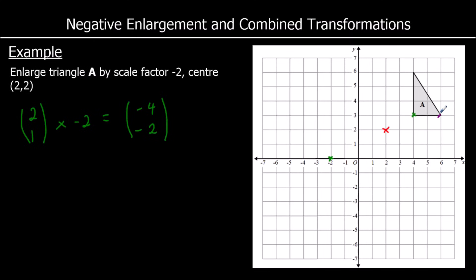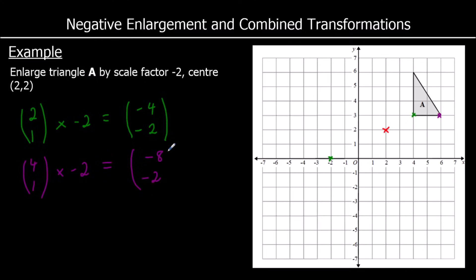I'm going to take another corner of the triangle. To get there from the centre of enlargement, I go 4 right, up 1 — so the vector is (4, 1). And I'm going to multiply that by negative 2, so that will now be negative 8, negative 2 — meaning left 8, down 2.